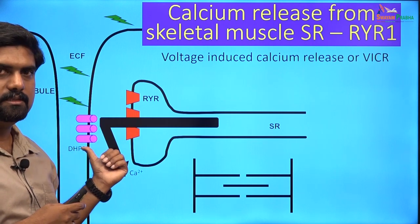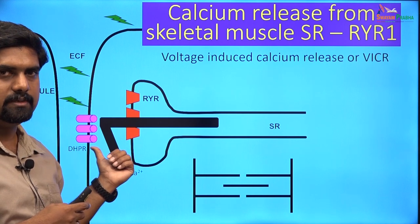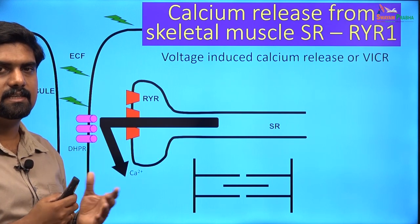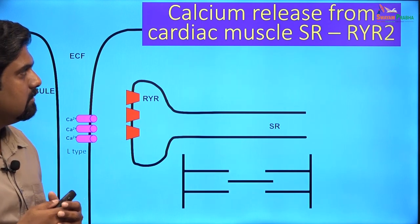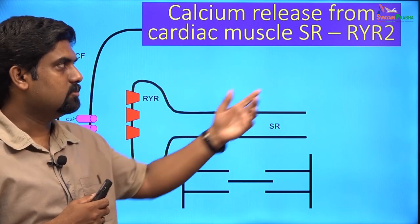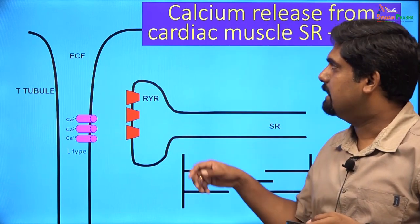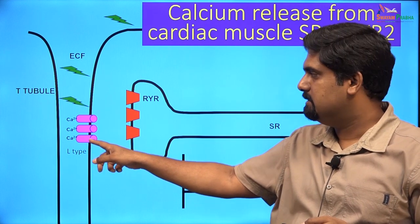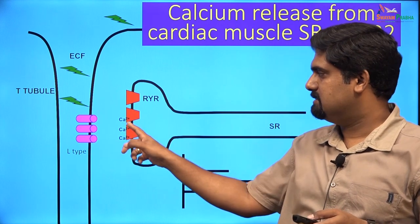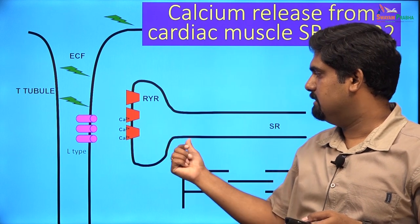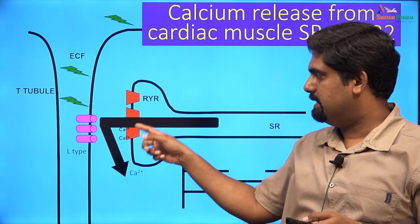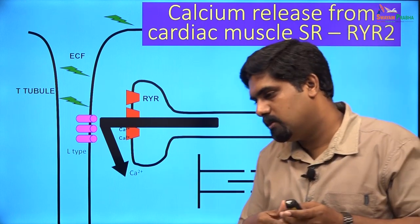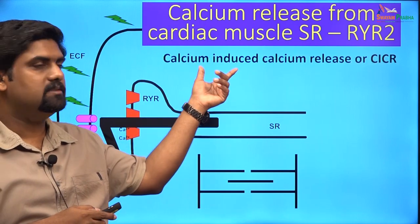In cardiac muscle, the SR calcium release is through ryanodine receptor type 2. When the cardiac muscle depolarizes and the signal reaches the T-tubule, L-type calcium channels are activated and calcium enters the cell. This calcium binds to ryanodine receptors on the SR, causing further calcium release into the cytoplasm. This rise in intracellular calcium causes sliding of the filaments. This mode is called calcium-induced calcium release or CICR, which is distinct from the voltage-induced calcium release seen in skeletal muscle.